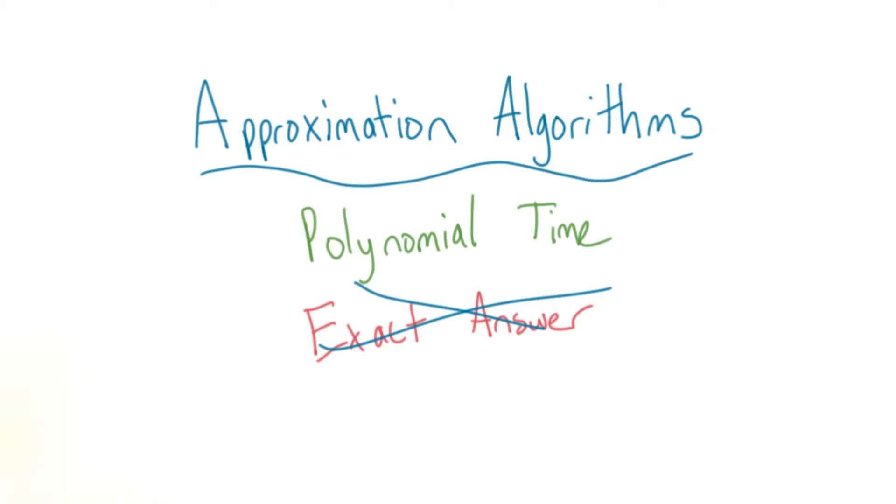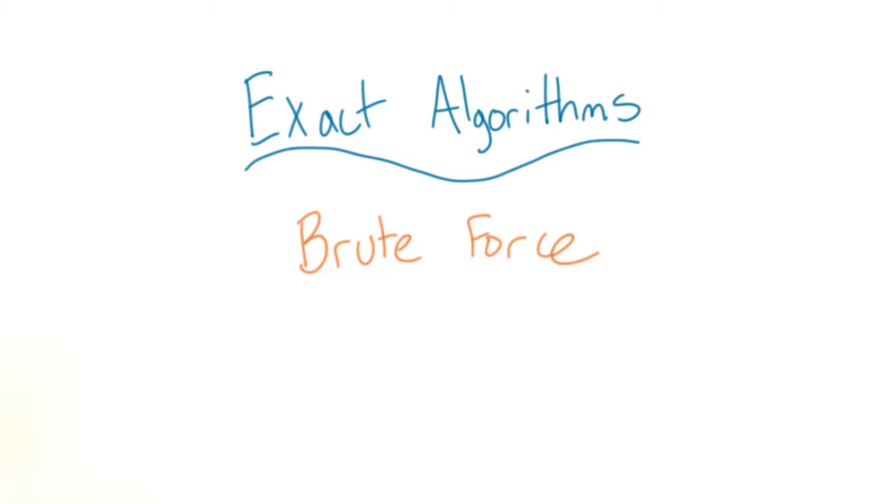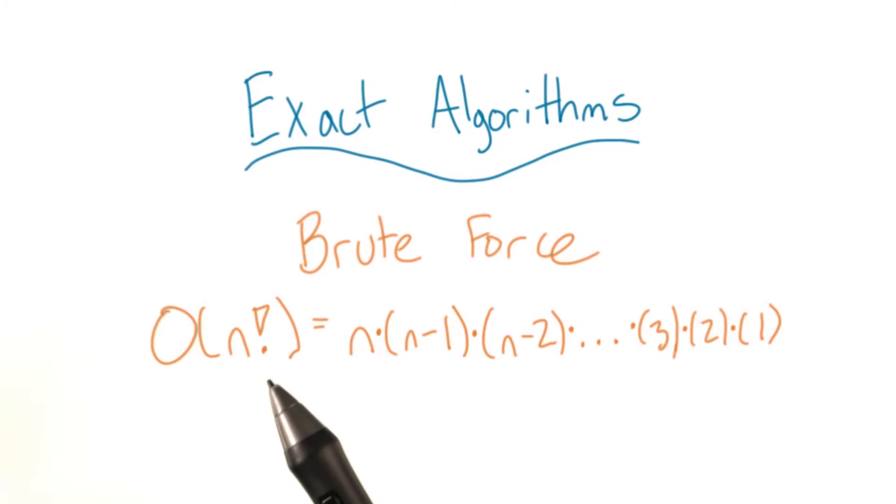The brute force solution to TSP has the same philosophy as the one for knapsack. Find every possible combination and pick the best one, but it takes significantly longer. It's in factorial time, so n multiplied by every integer between it and one.